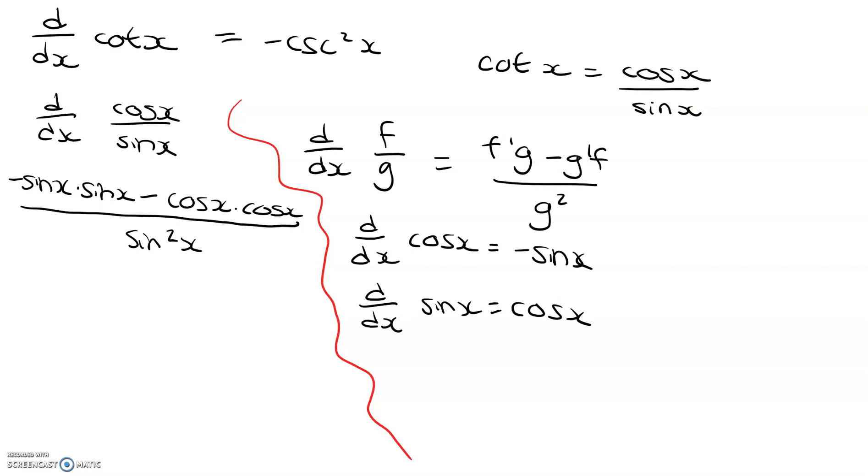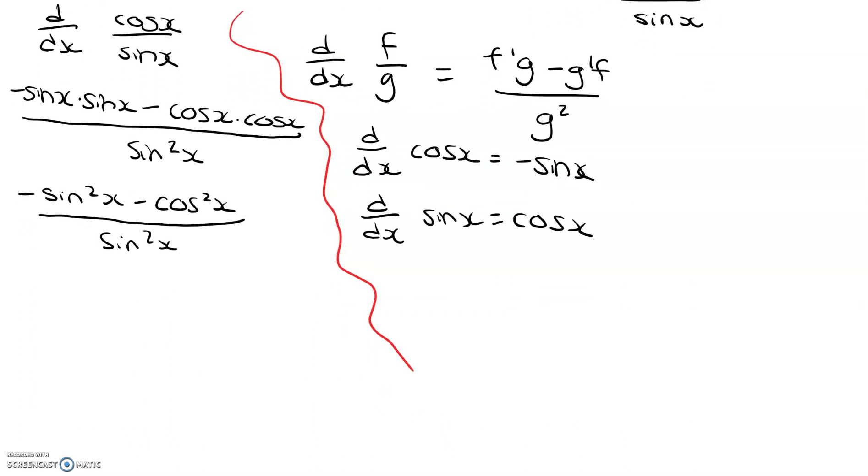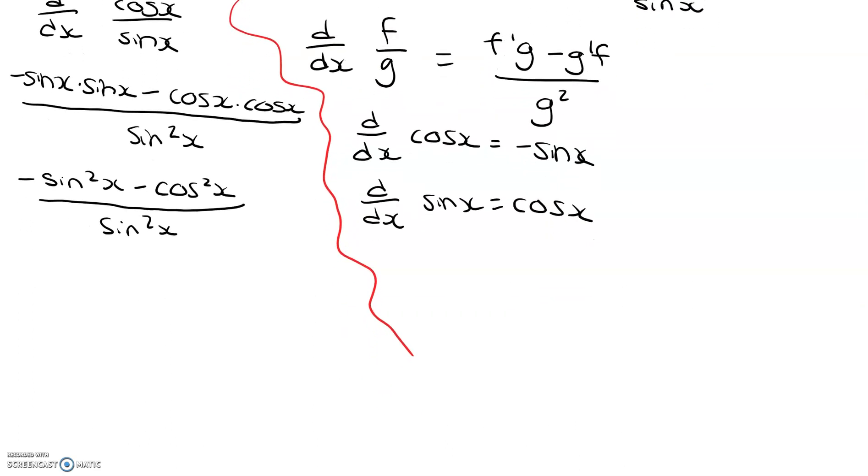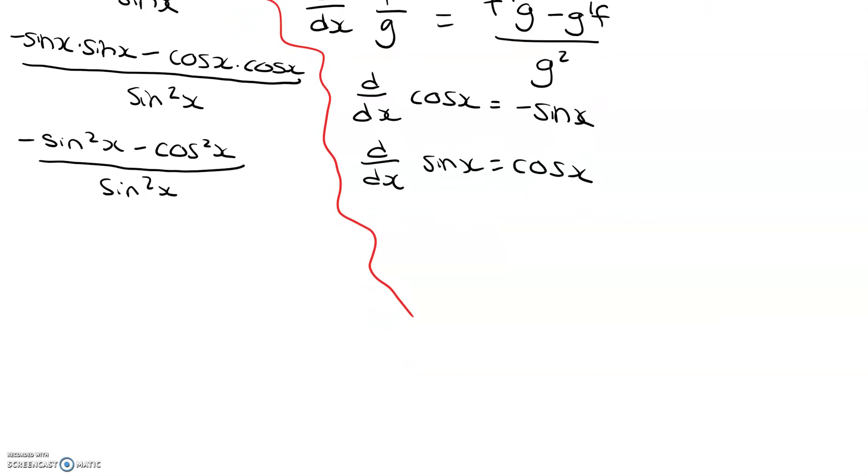All right, continuing on, we get negative sine squared x minus cosine squared x all over sine squared x. Okay, I'm just going to scroll down a little bit, make some more room.